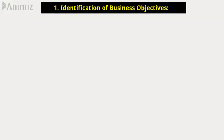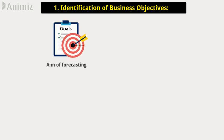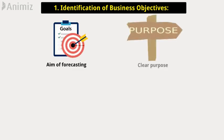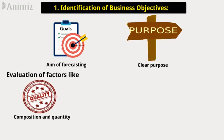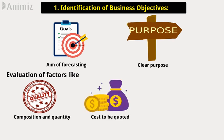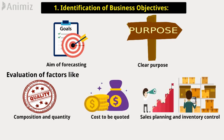Steps in demand forecasting. Step 1: Identification of business objectives. Initially, we should know about the aim of forecasting. Demand forecasting should have a clear purpose. Evaluation of factors like composition and quantity of demand for goods, cost to be quoted, sales planning and inventory control, etc., is done in the identification stage.